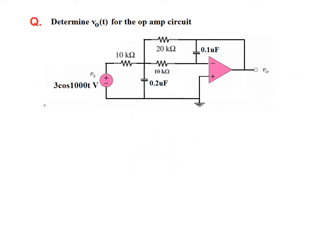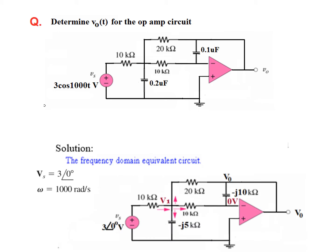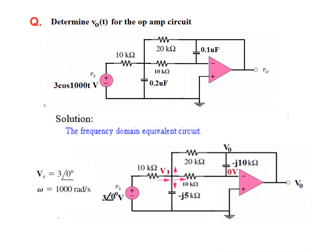Let's start with an example. In this case, we need to find the output voltage V0, given input 3 cos 1000t. First of all, we need to convert the circuit into phasor form or frequency domain, where omega is 1000. The source becomes 3 angle 0 and we will use omega to find out the value of these two capacitors. You can get this circuit in phasor form or frequency domain.